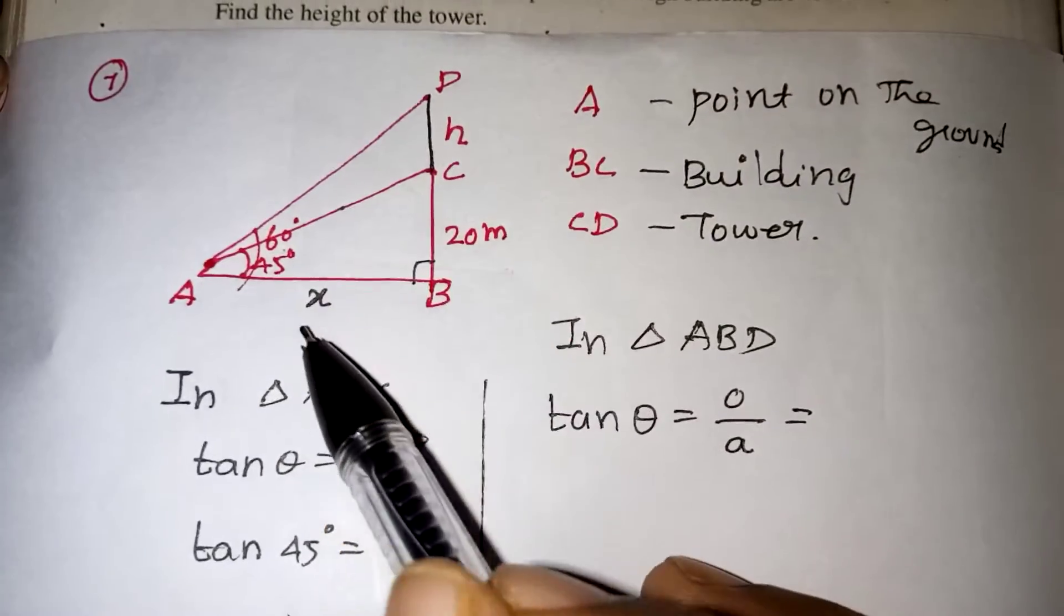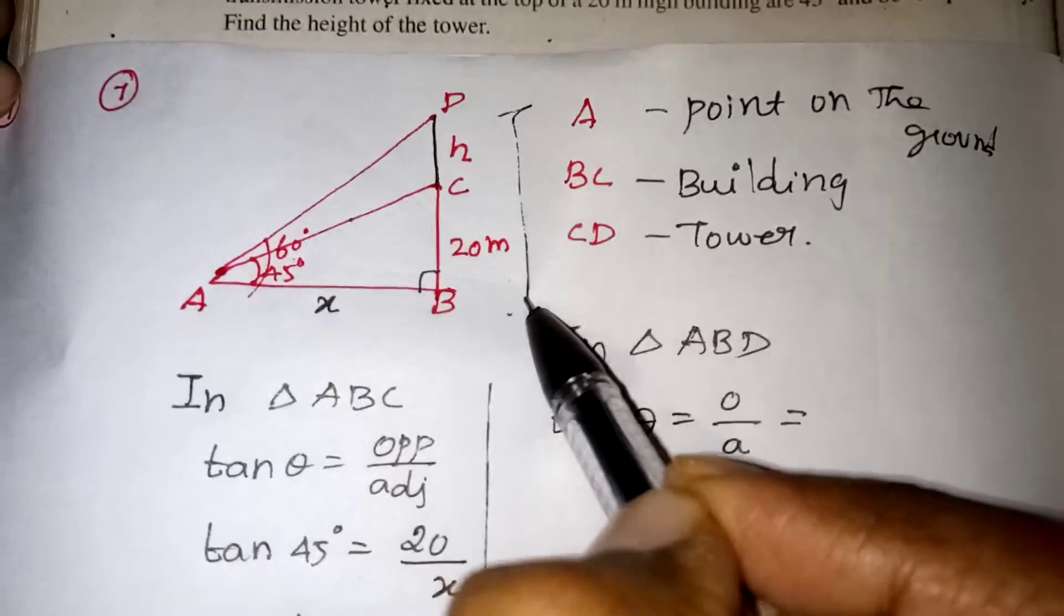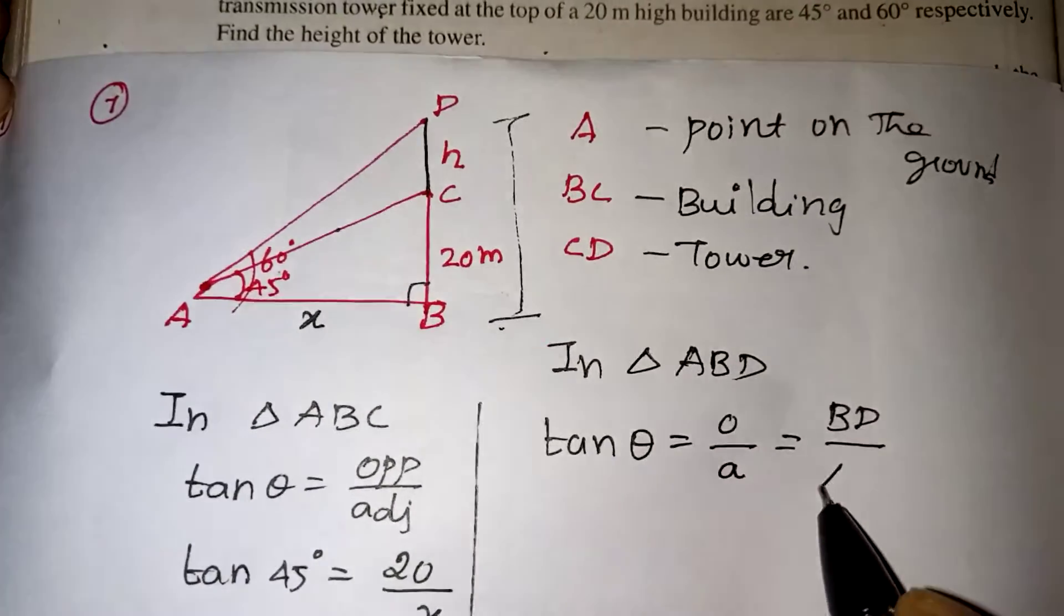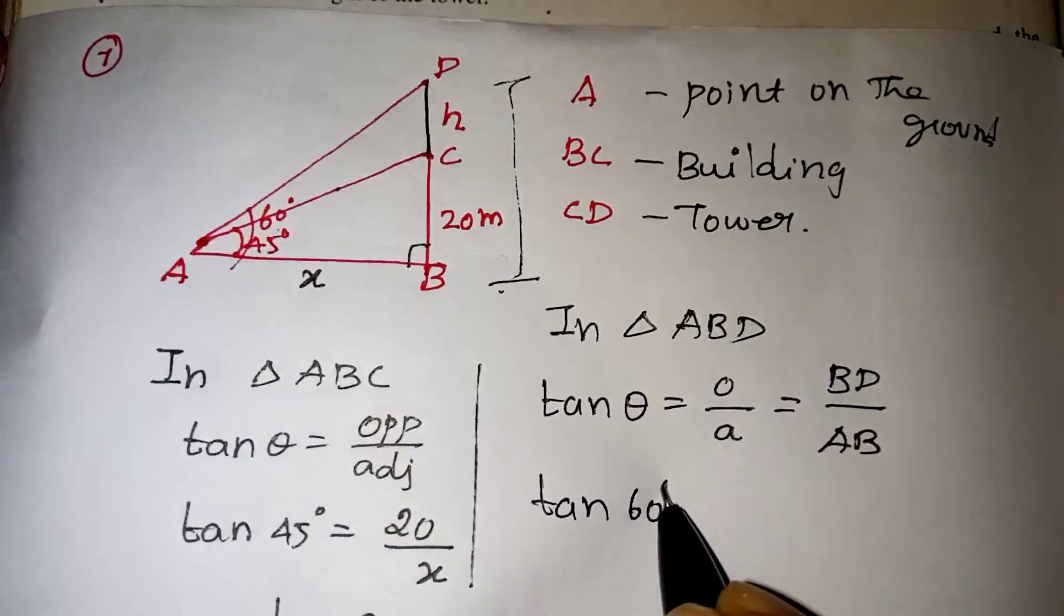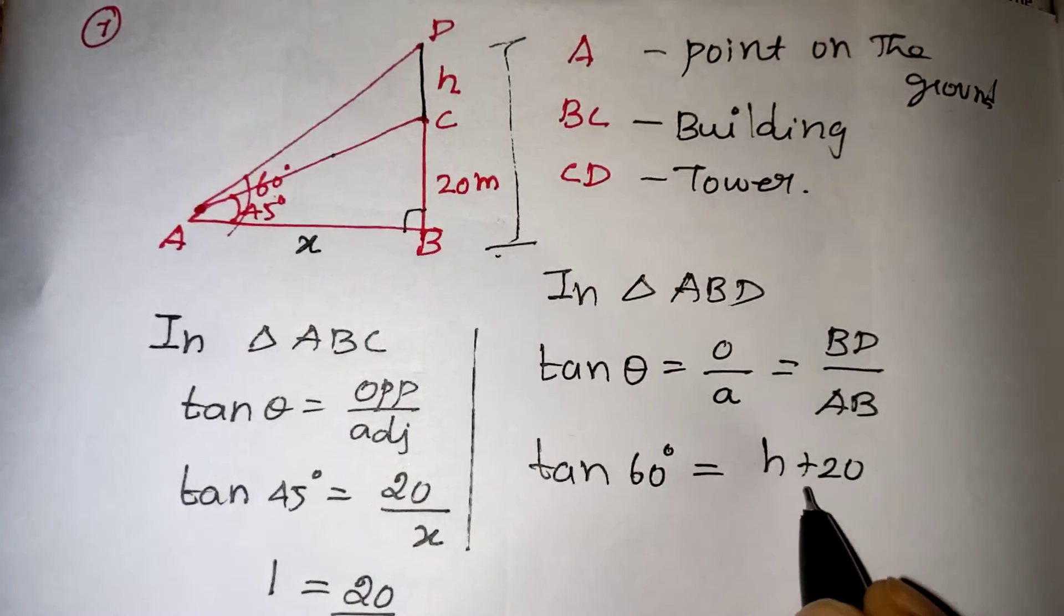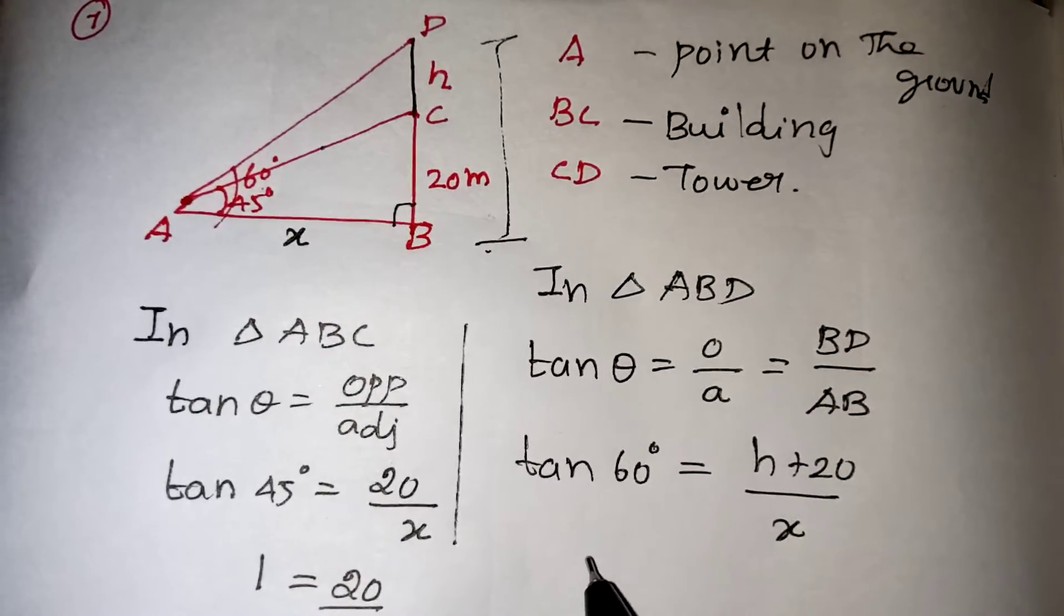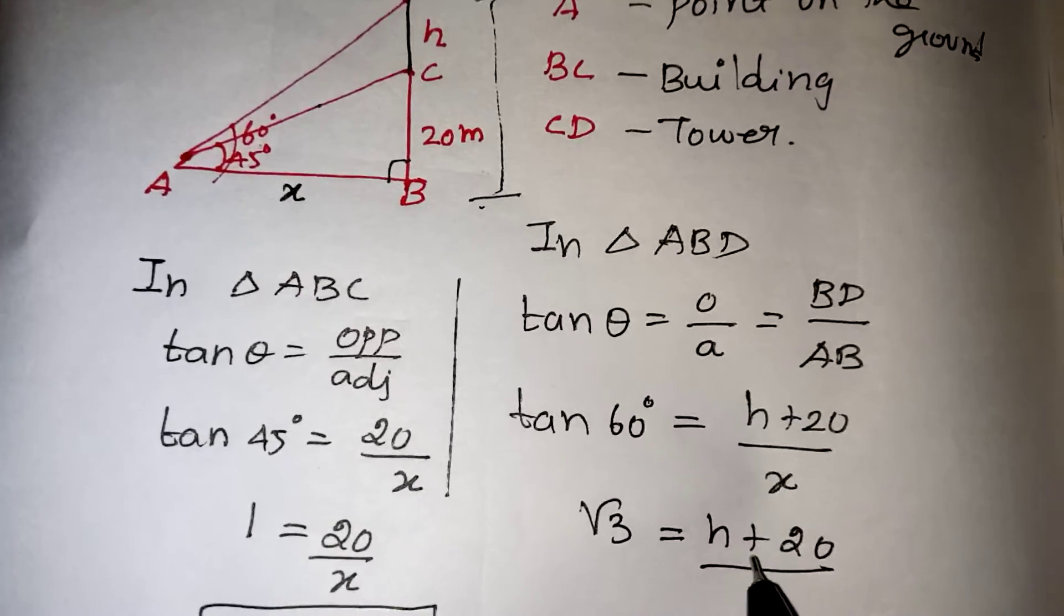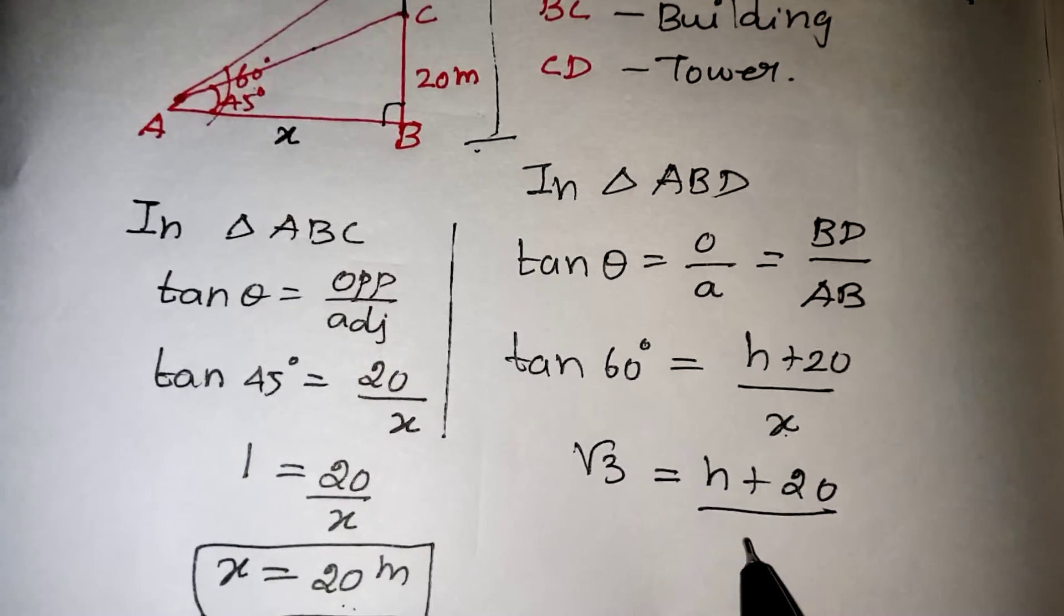When we are taking the whole triangle, that opposite side will be the whole length, that is h plus 20. The whole length is h plus 20, that is our BD value by AB value. Tan theta value is 60 degree for the whole triangle. BD is nothing but from the top to bottom, that is h plus 20 and our AB is x. Tan 60 degree value root 3, which is equal to h plus 20 by, in the place of x we have taken 20, substitute here.